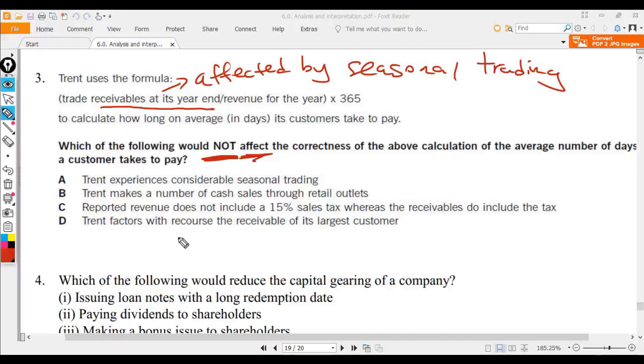C: reported revenue does not include 15% sales tax but the receivable do include the tax. So basically you are doing 100 divided by 115. This one will affect the ratio.